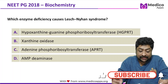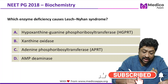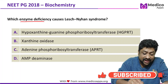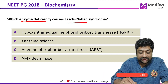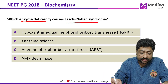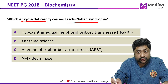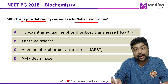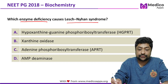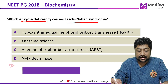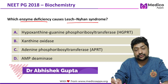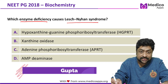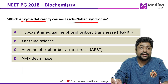This question appeared in 2018. It asks: which enzyme deficiency causes Lesch-Nyhan syndrome? The options are: hypoxanthine-guanine-phosphoribosyl transferase (HGPRT), xanthine oxidase, adenine-phosphoribosyl transferase (APRT), and AMP-deaminase.